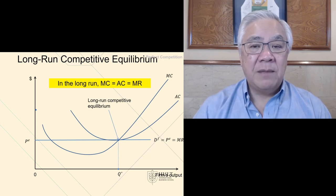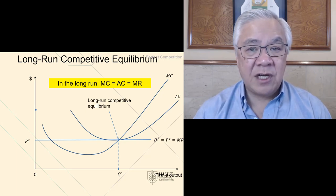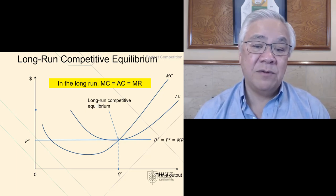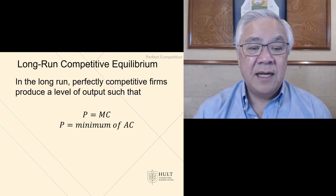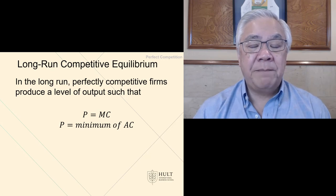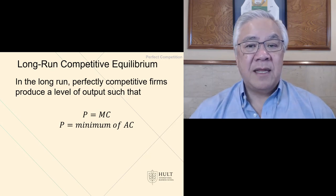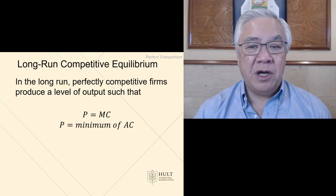So in the long run, the marginal cost equals the average cost, which equals the marginal revenue or the price. Stated more precisely, price equals marginal cost and price is also equal to the minimum of the average cost. That means there's no incentive to move beyond that point.